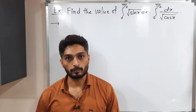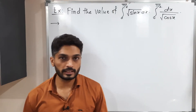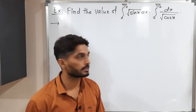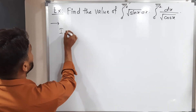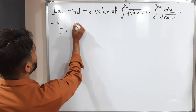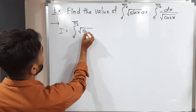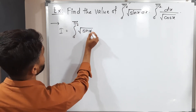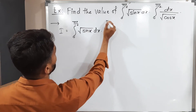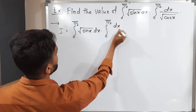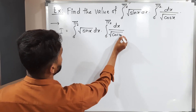Let us discuss this example. We have to find the value of this integration. So let us write the given integral first — we'll call it as I. So I is equal to integration from 0 to π/2 of √(sin x) dx, multiplied by integration from 0 to π/2 of dx upon √(cos x).